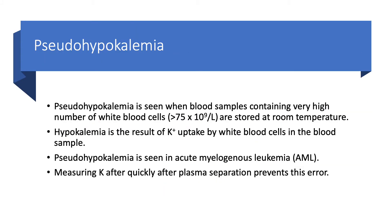Number one: pseudohypokalemia. This happens when you have a very high white blood cell count — instead of 4,000 to 10,000, you have 75,000 — and you store the blood sample at room temperature. Those white blood cells will uptake potassium and potassium falls, but this is not true hypokalemia. You see it in patients with acute myelogenous leukemia, AML, because they have a very high white blood cell count. You repeat the sample and measure potassium quickly — don't let the sample sit in the lab.